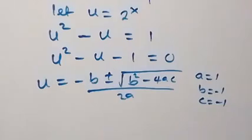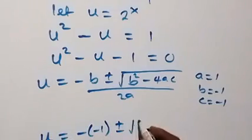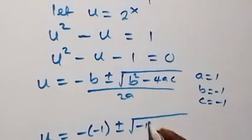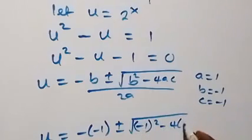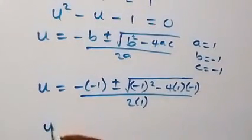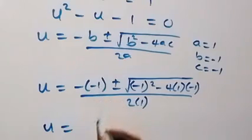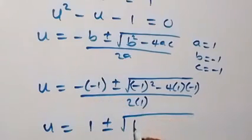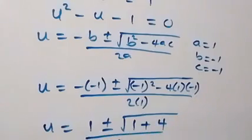Then, solving this here, we have u equals to minus minus 1, plus or minus square root of minus 1 squared minus 4 times 1 times minus 1, then all over 2 times 1. Simplifying this: 1 squared is 1, then minus times minus is plus, that's plus 4, all over 2.